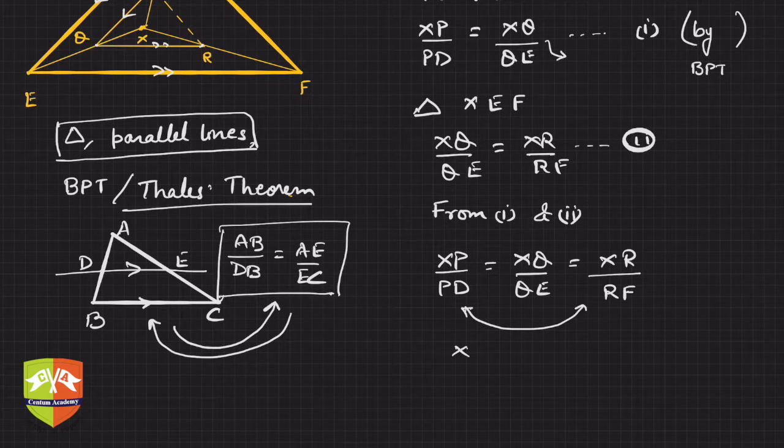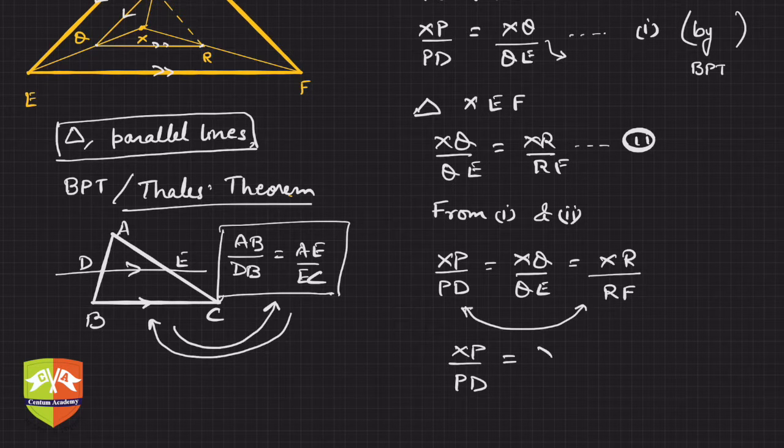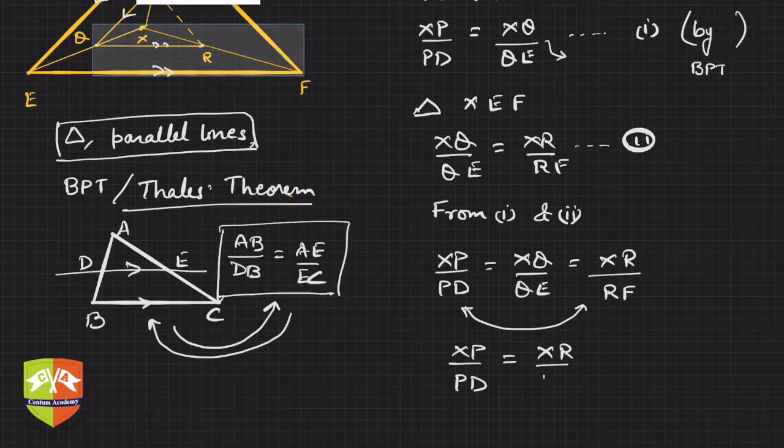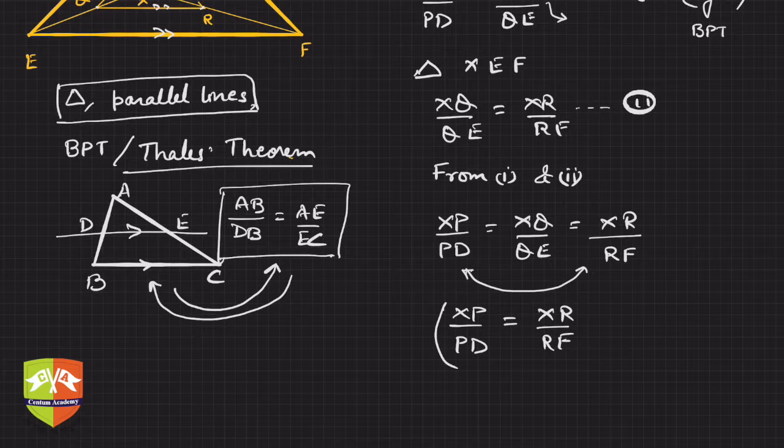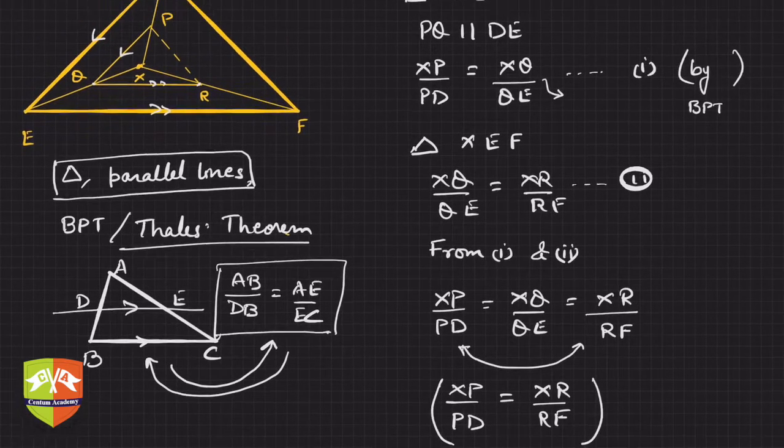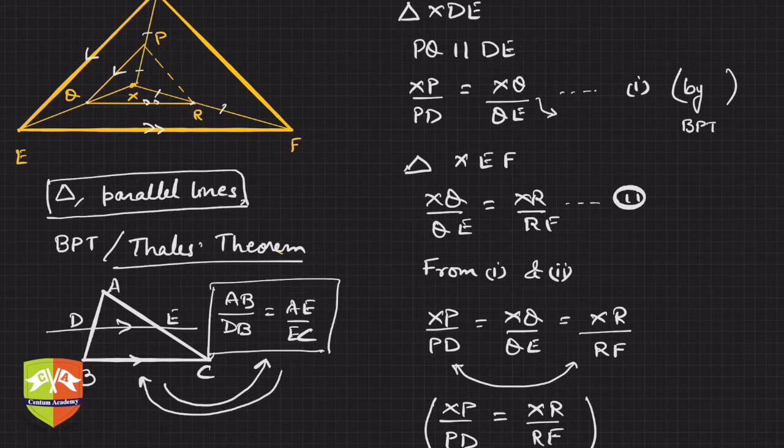That means XP upon PD is equal to XR upon RF. Now if you see XP upon PD is equal to XR by RF, what does it mean? It means that this side by this side is equal to this by this.